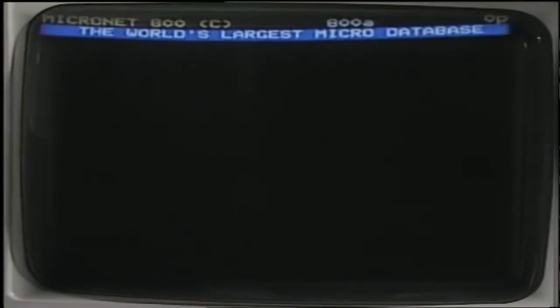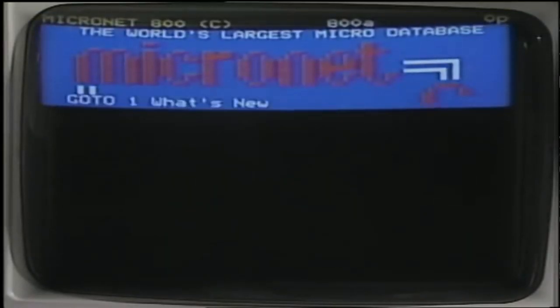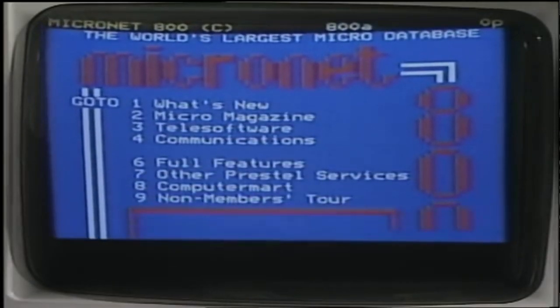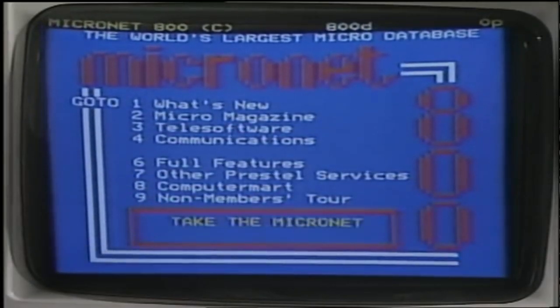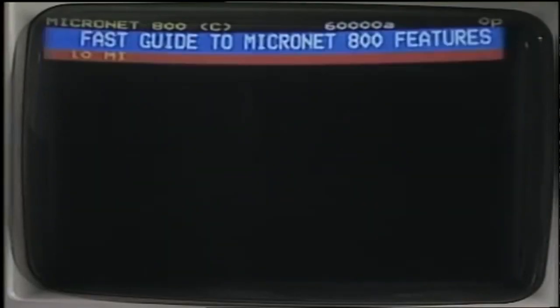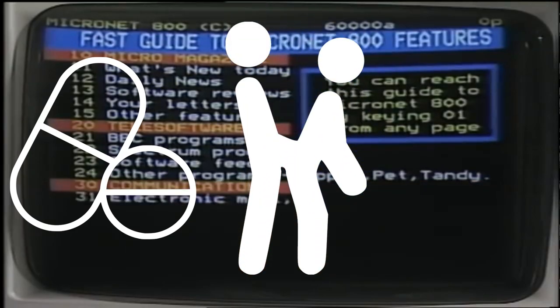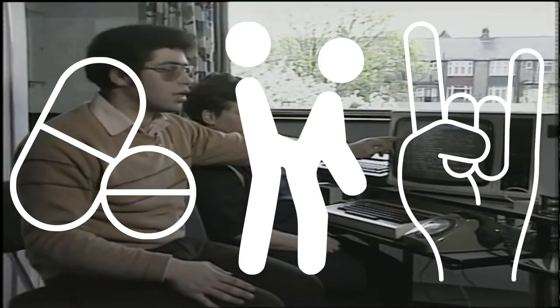Usenet was modeled on the old bulletin board systems, where you'd actually phone a number with your modem to connect to what was essentially a server based in someone's bedroom computer. A simpler time. Unusually for the internet, pornography, drugs and violence did not lead the charge, and the Usenet admins, known as the Backbone Cabal, kept it clean. Of course it eventually succumbed, and alt-drugs, alt-sex and alt-rock'n'roll were born.